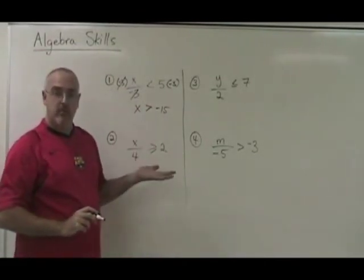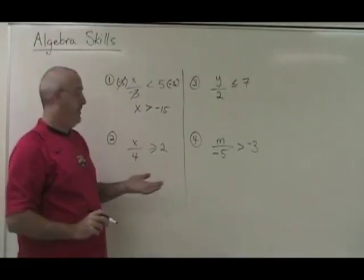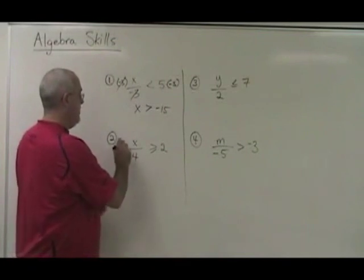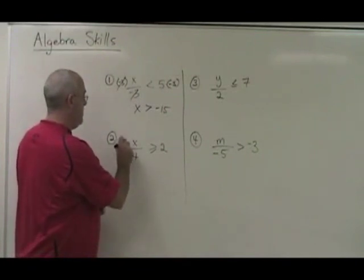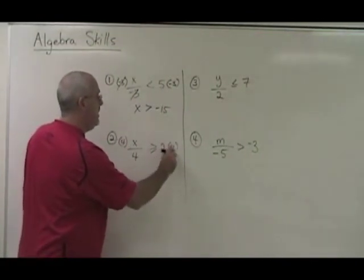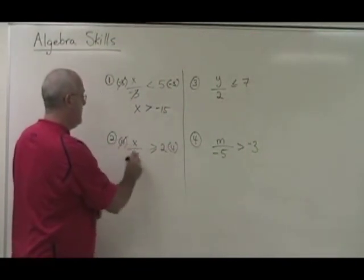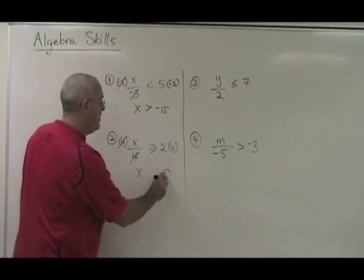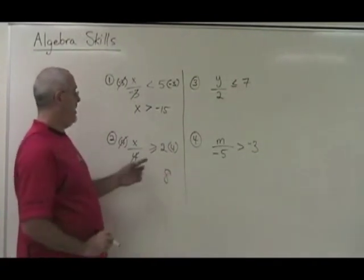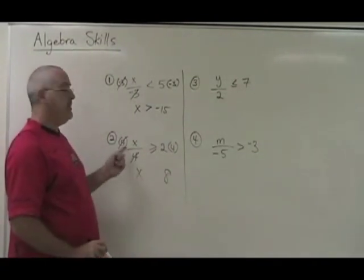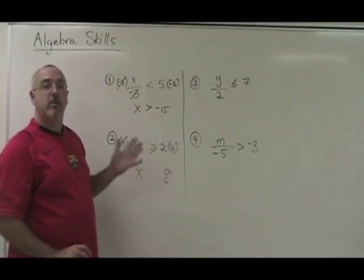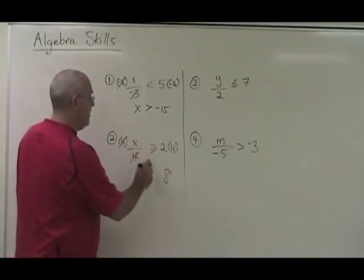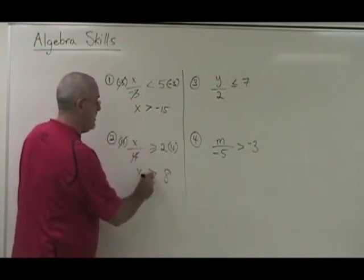So it works with the same rule as division. Here, my x is being divided by 4. I must multiply both sides by 4 in order to cancel these and isolate my x. 2 times 4 is 8. But this time I multiply both sides by a positive number, so therefore the symbol stays the same.